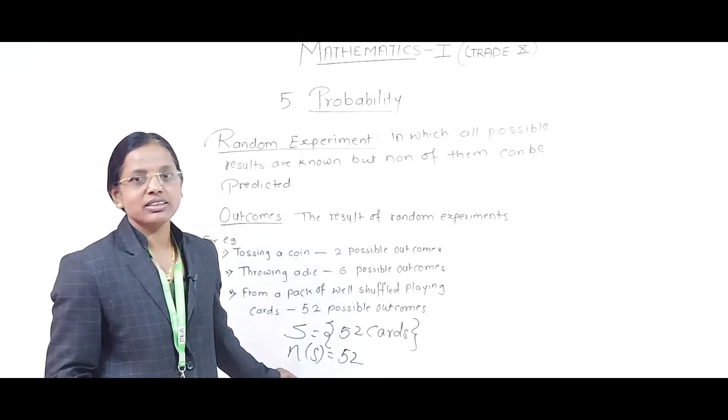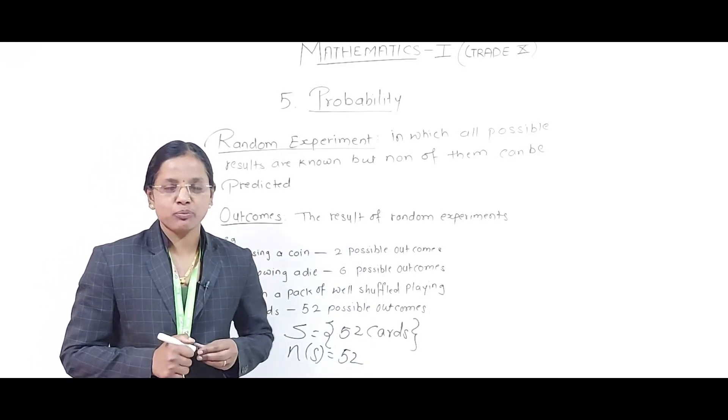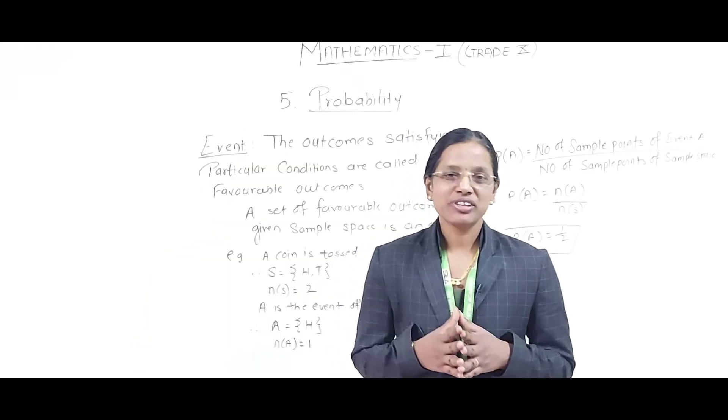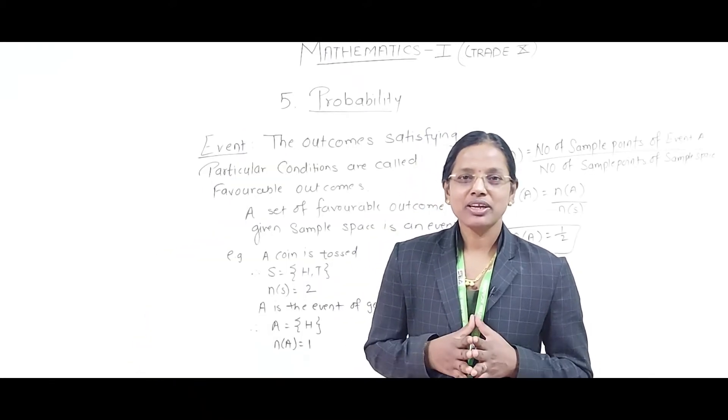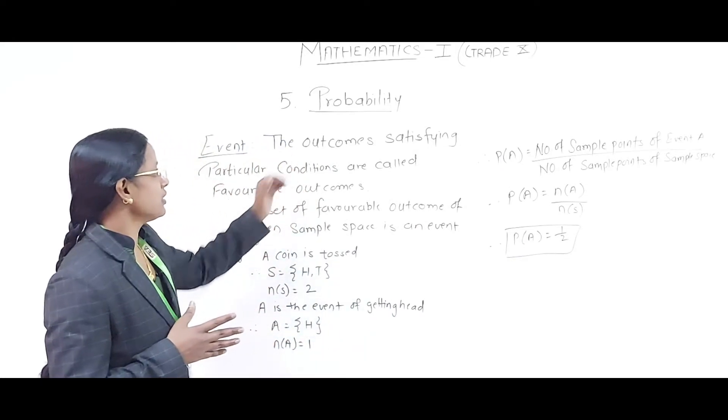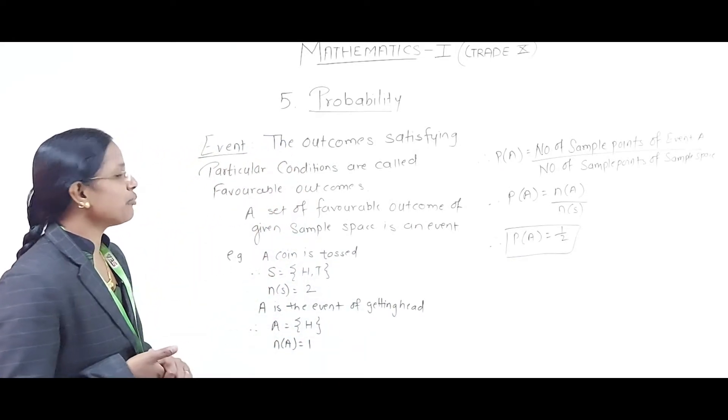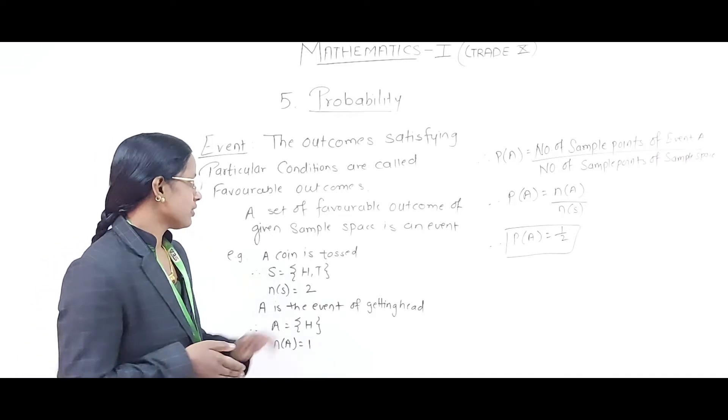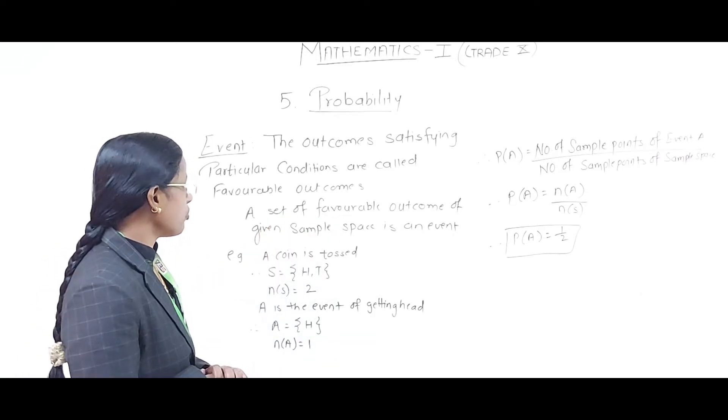In this way, we can write the sample space and sample points for the given experiment. Now we will see events. In events, we need favorable outcomes. Favorable outcomes means the outcome satisfying particular conditions, and a set of favorable outcomes of a given sample space is called an event.